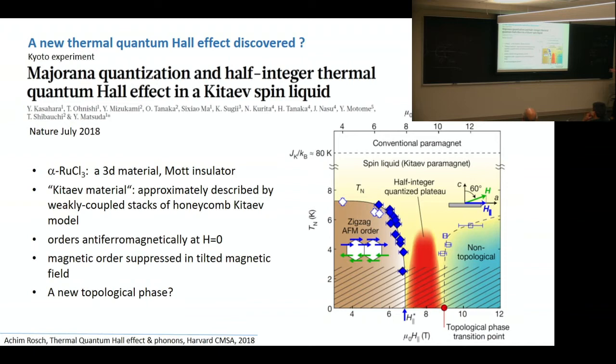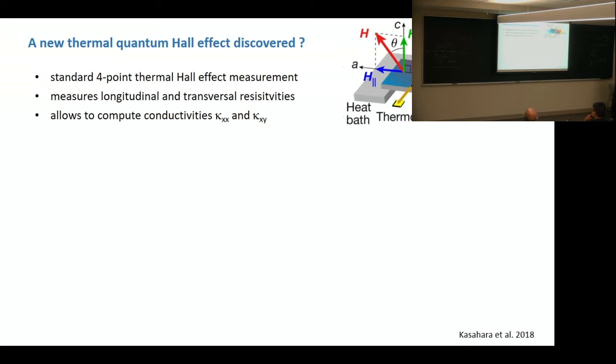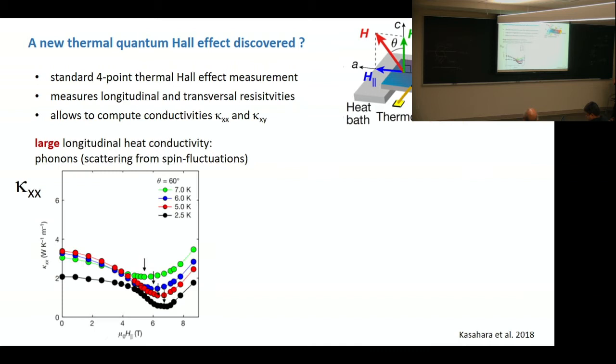And then if you do this at a certain tilt of magnetic field, it seems that you enter a special topological phase. And the quantity which is measured is the thermal Hall effect. And the experiment is a very simple one. So it's a very standard thermal Hall experiment. So you take a sample, induce heat on it, include thermometers on the sample, and then you measure the longitudinal and transverse resistivities. And then you use that to compute the conductivities kappa XX and kappa XY.